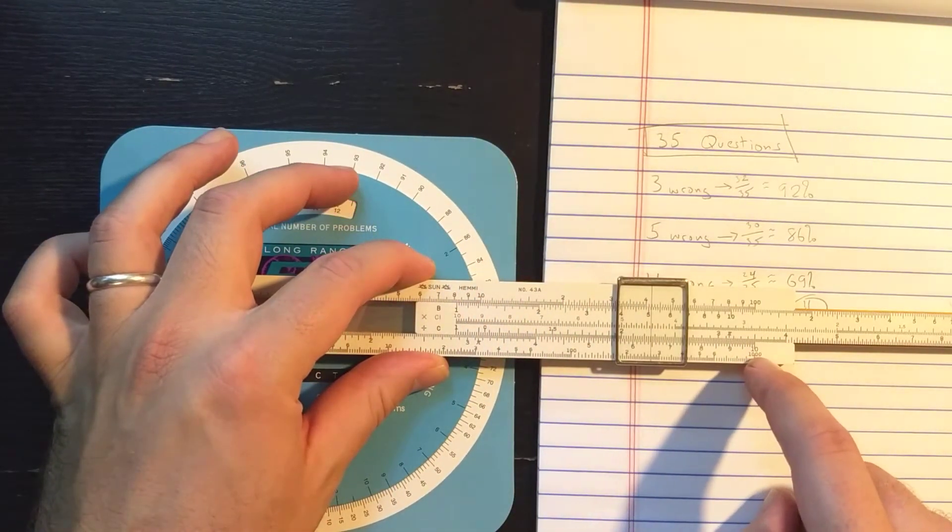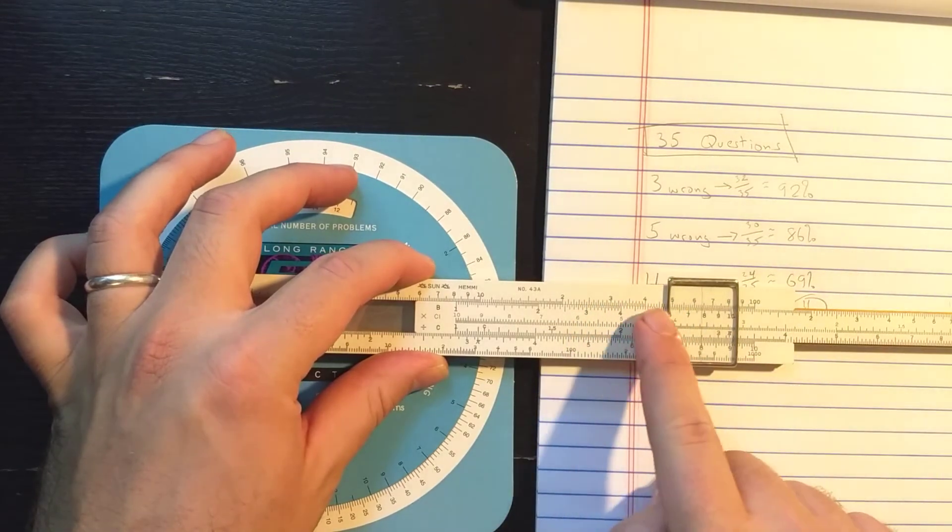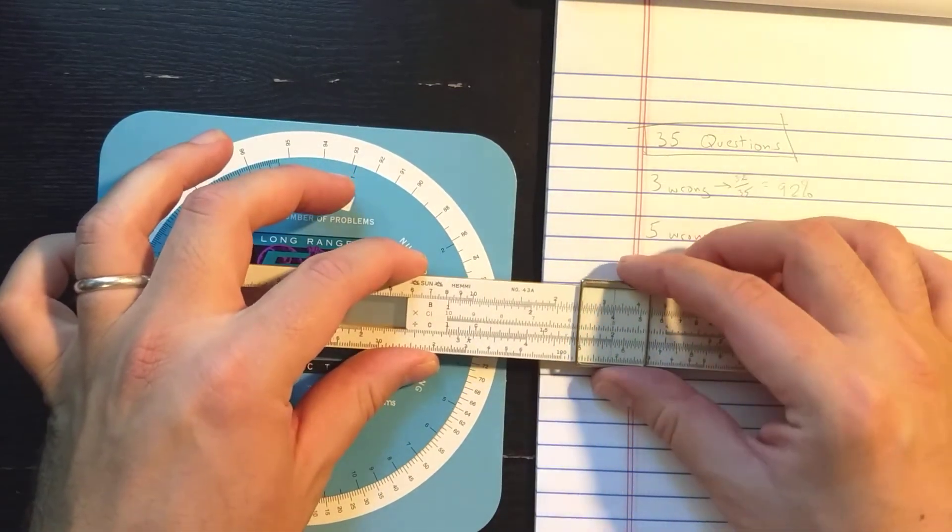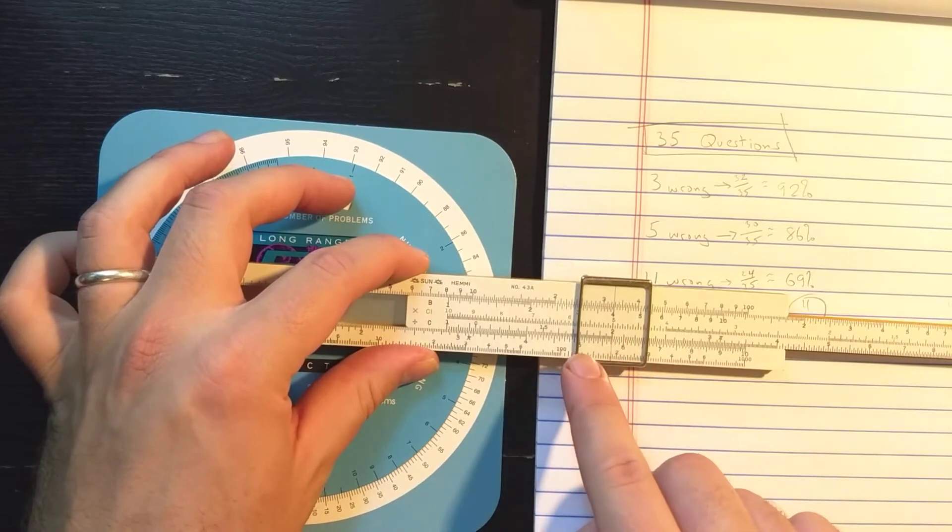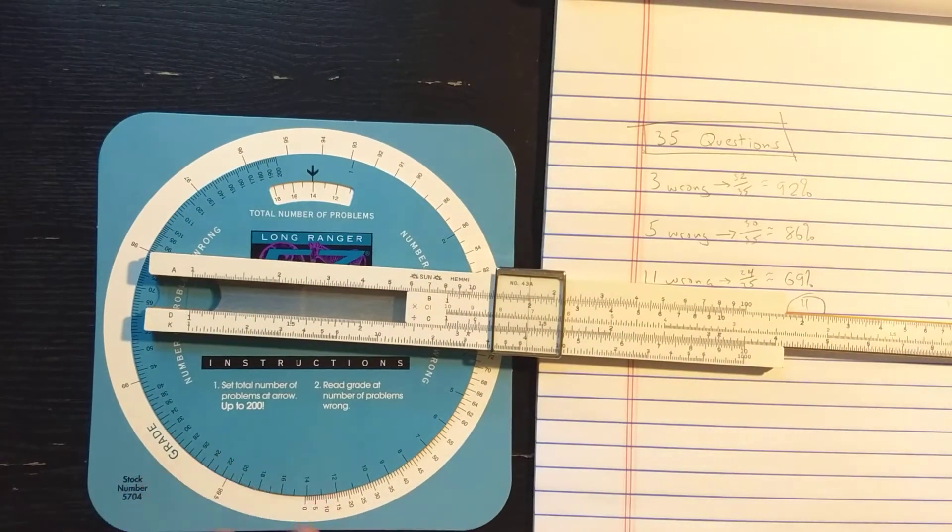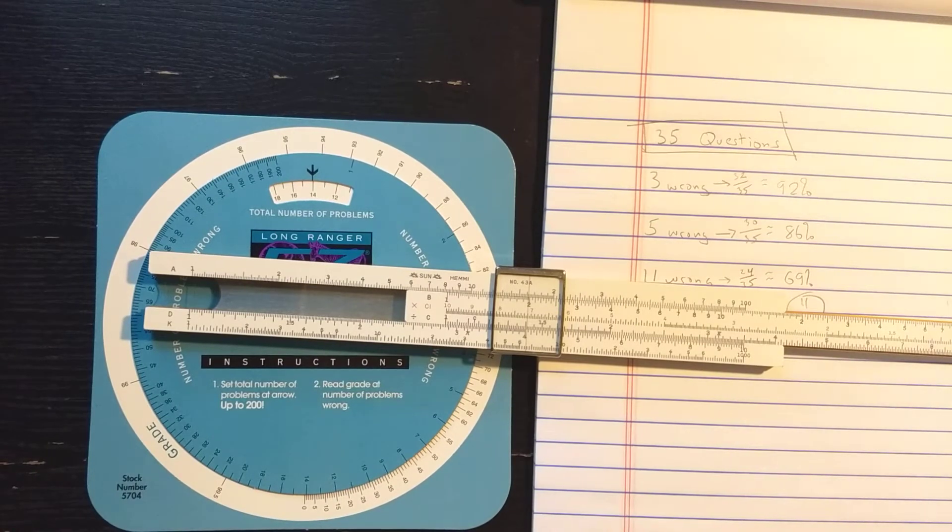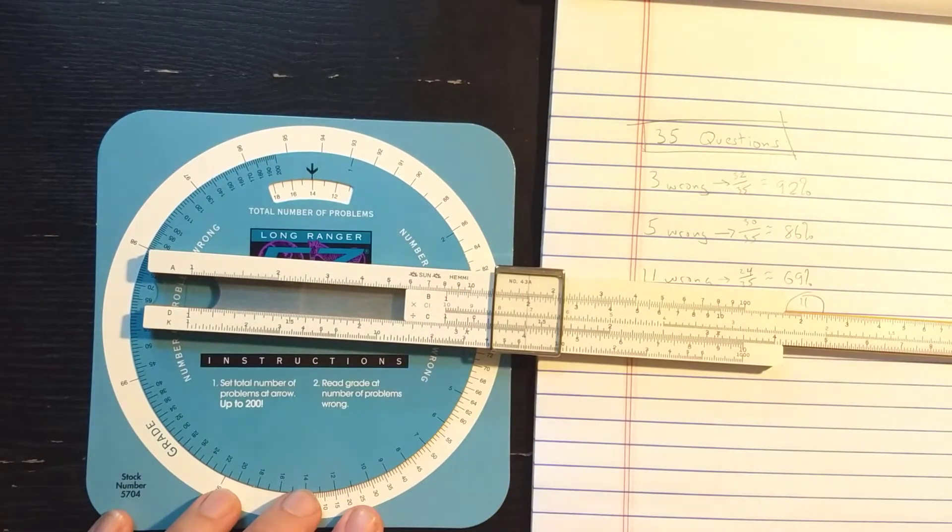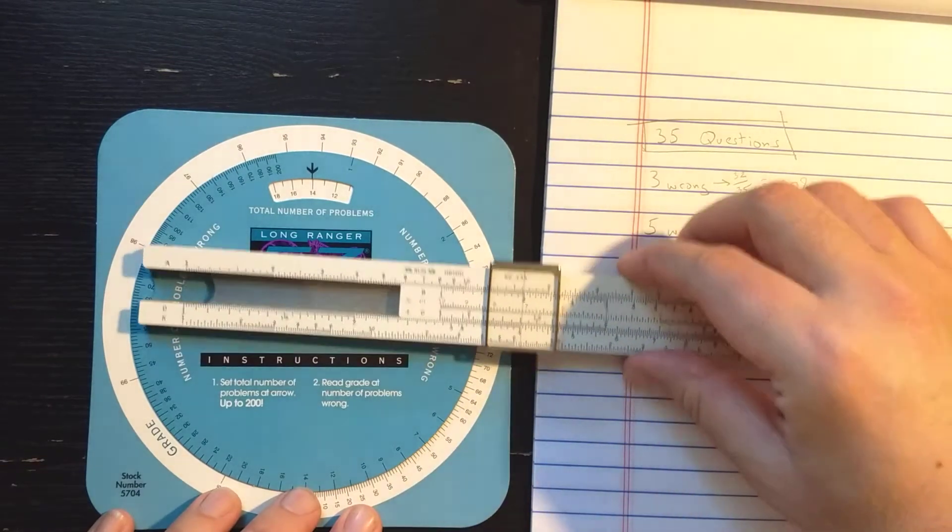So everywhere you read, you read the same fraction. So 35 over 100 is the same as, let's say, 2 over whatever number here. So sometimes these are called proportional scales. Or this is a proportional ruler, logarithmic ruler. Okay, most of my viewers are familiar with the slide rolls.